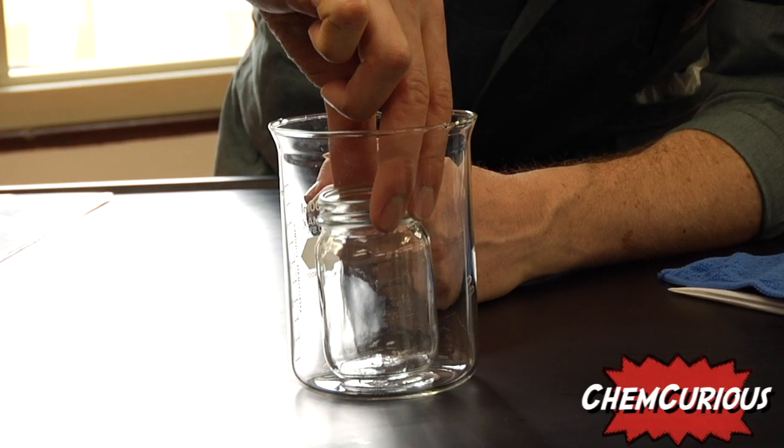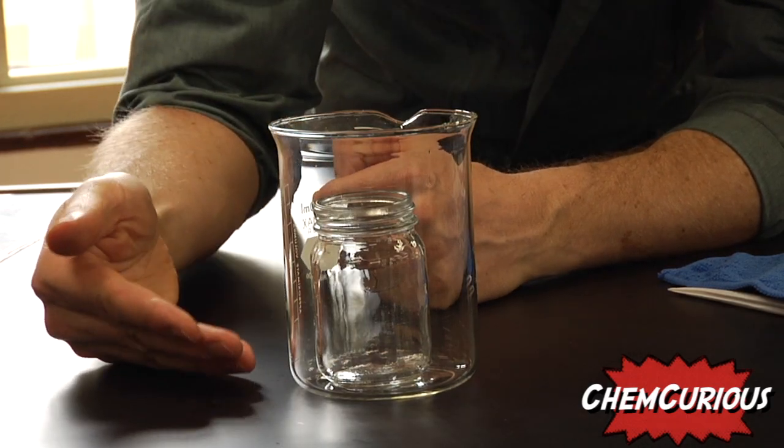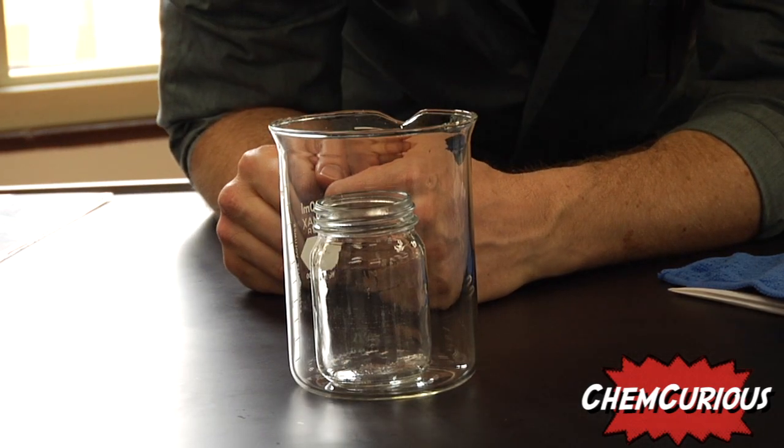By putting a glass jar inside a glass beaker, we're going to make the glass jar disappear by using glycerol.